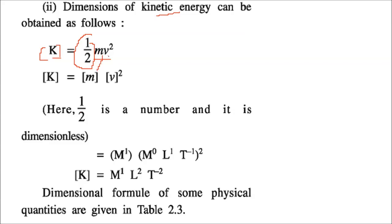M is simply M to the power 1. For V², we use the dimensional formula of velocity: M⁰ L¹ T⁻¹, and square it. Squaring gives M⁰, L², T⁻². Combining: M¹ × M⁰ L² T⁻² = M¹ L² T⁻². So the dimensional formula of kinetic energy is M¹ L² T⁻².